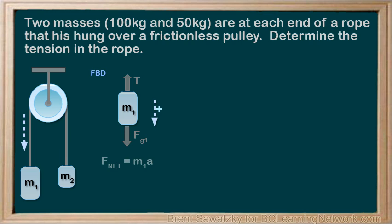Therefore, we'll have Fnet equals M1A, and Fnet is Fg1, the force of gravity pulling it down, and minus T, the tension in the rope pulling it back up, and that equals M1A. And we know the mass M and can determine the force of gravity, that is Mg, but we still have two unknowns, T and A.